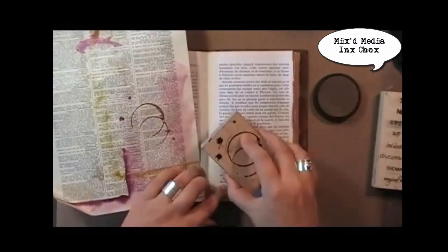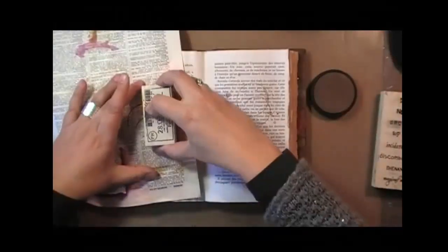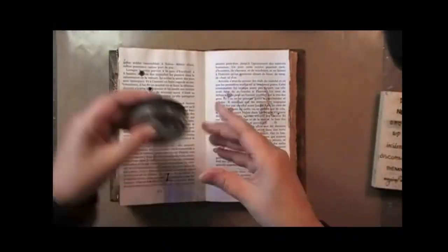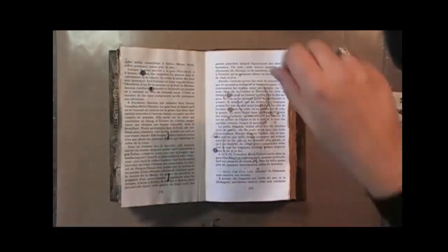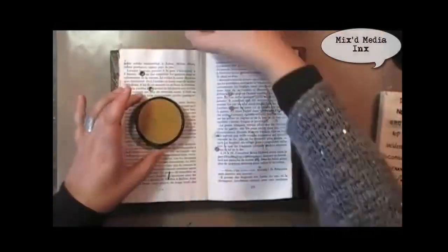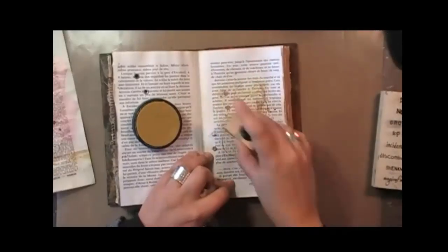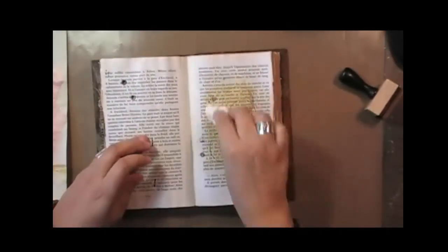Then using Donna Salazar's mixed-media inks chalks, which is a permanent ink when heat set, I'm stamping on that little patch of clear gesso, quickly heat setting it. Then using the mixed-media inks, which is a slow drying version of the ink, I'm applying a tiny bit of color and using a baby wipe I'm blending it.